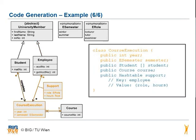In the last example of code generation, we want to translate the class course execution. The relationship from course execution to student with multiplicity star is translated into student with brackets and the name student. Each course execution has a relationship to exactly one course. In practice, you would give the attribute course number directly into the course execution in the class diagram, but the translation into Java is the same as with the one-to-one relationship. The association class support is translated into a hash table support.